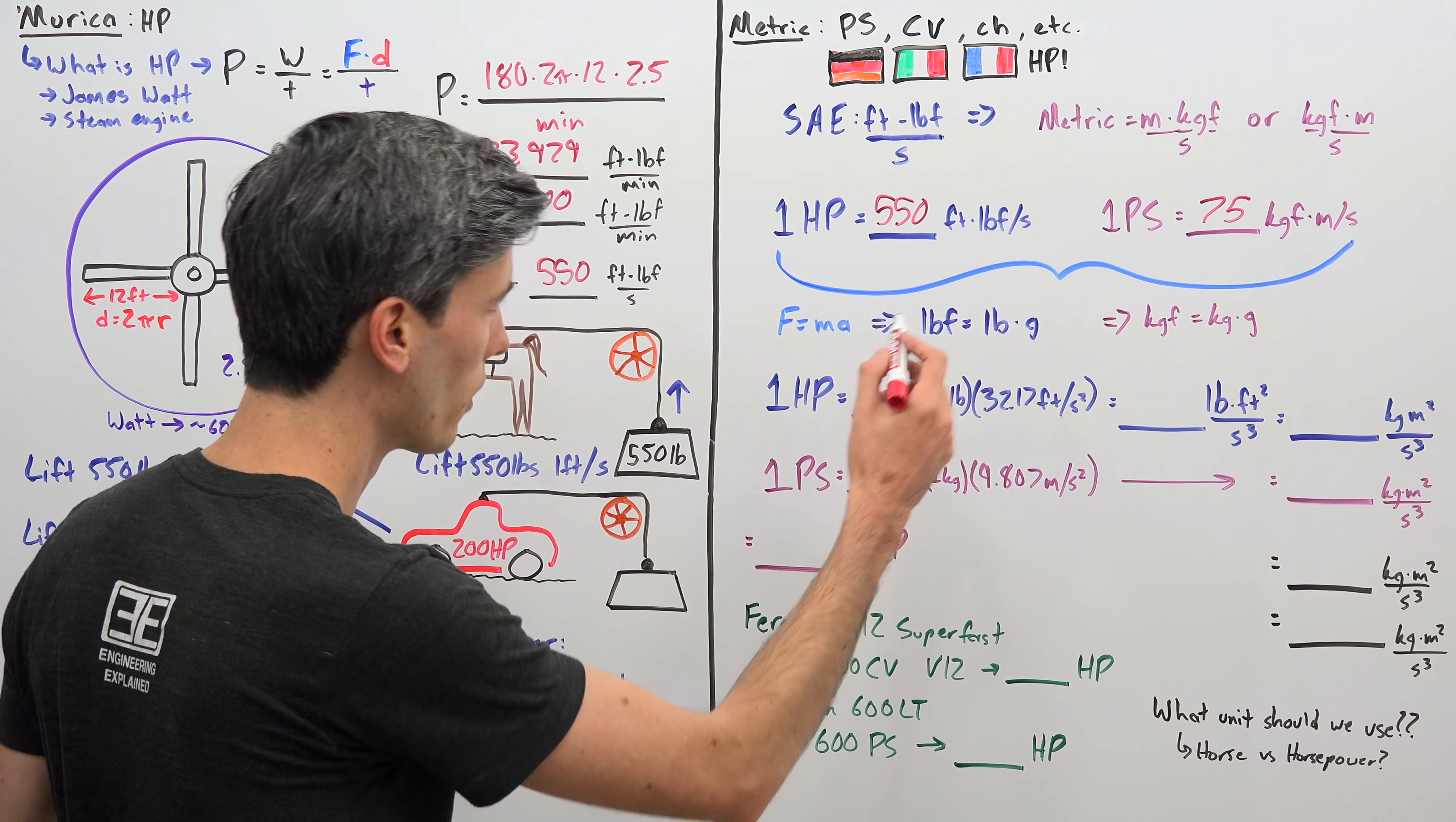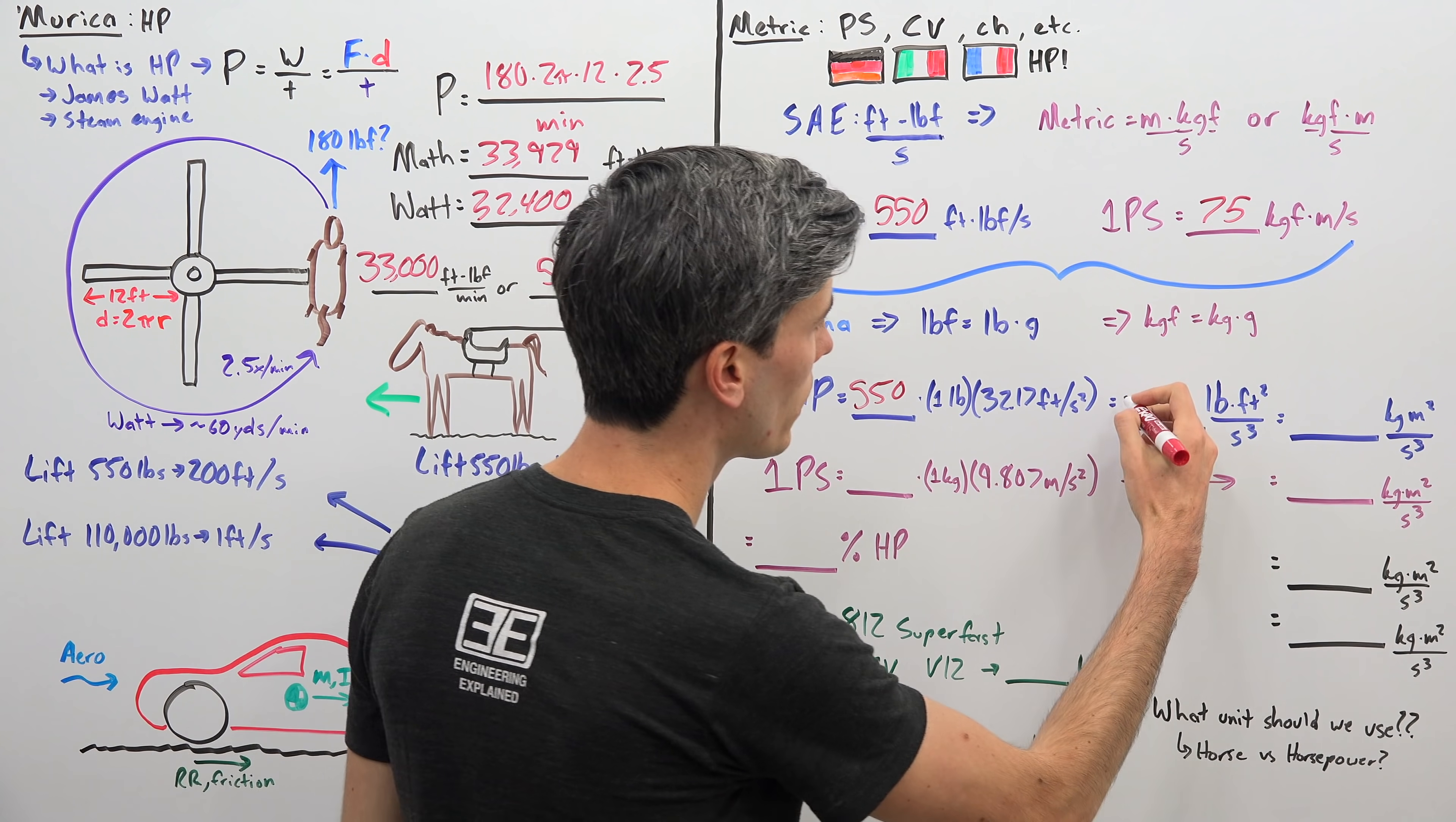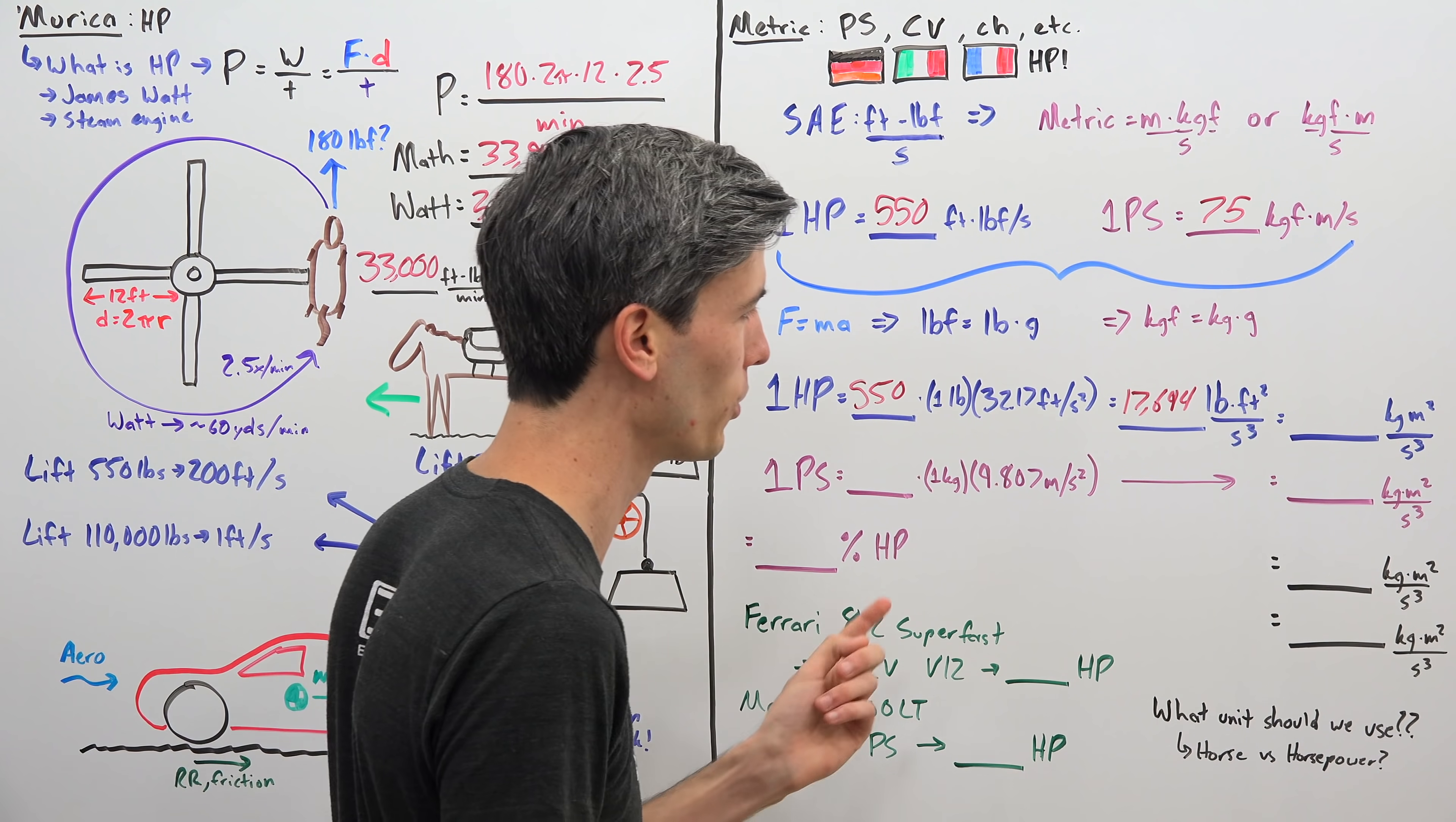So for example with our 550 foot-pound force per second, if we multiply that by gravity here to write it all out in complete units, so we have 550 multiplied by 1 multiplied by 32.2 feet per second squared, that's gravity's pull in SAE units, then we get a number of 17,694 pound feet squared per second cubed. Now I know looking at this it's like what is all this, it's meaningless and it truly is, it's truly just meaningless so let's just power through and we'll get to some very interesting conclusions.